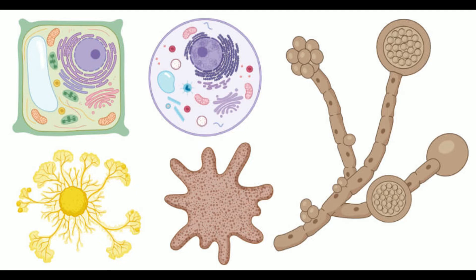Steps of Binary Fission: The DNA of the cell divides to form two identical DNA molecules, both of which are moved towards the cell membrane. The cell then doubles its size, and the cell membrane slowly starts to divide with each half having a copy of the DNA. Once the division of the cell membrane is completed, the cell wall is formed between the two strands of DNA, dividing the parent cell into two identical daughter cells.